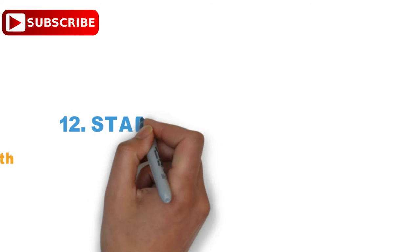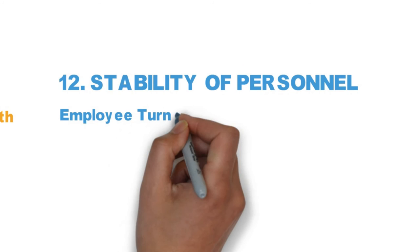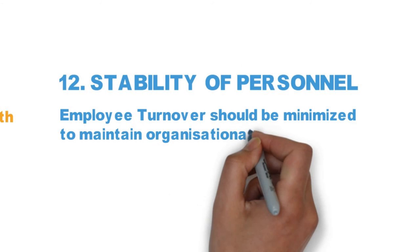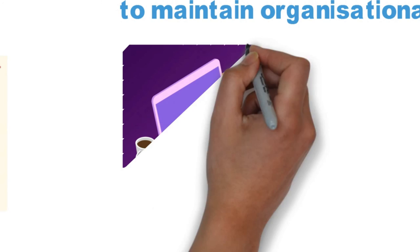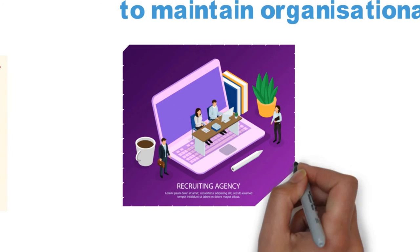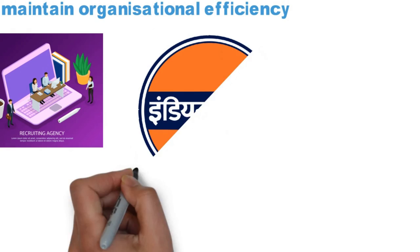Principle number twelve: Stability of Personnel. According to Fayol, employee turnover should be minimized to maintain organizational efficiency. In an organization, employees should be selected and appointed after following a due and common procedure. Once they are appointed, they should be kept at their position for a minimum fixed period. For example, Indian Oil is one of the companies whose employee turnover ratio is very low.